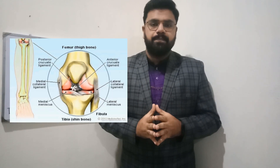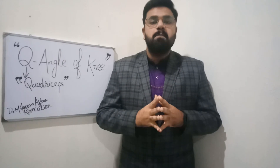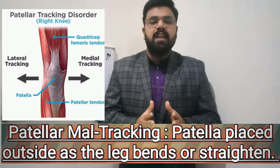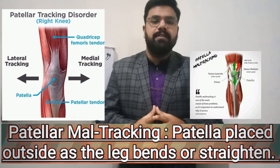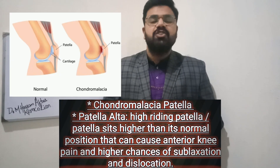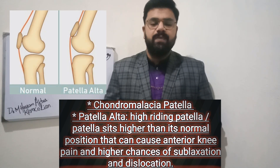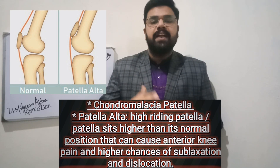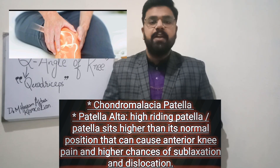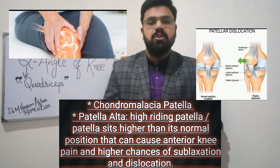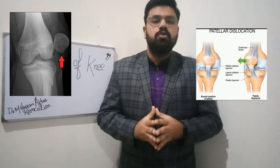Now we will briefly discuss the impact of an increased Q angle on knee joint function. First, the patella moves outside of its normal position, generally in the lateral direction. Second, the chances of chondromalacia patella also increase. Third is patella alta, also defined as high-riding patella, where the patella is placed higher than its normal position, which can cause anterior knee pain and increase the chances of patellar dislocation. Lateral tracking of the patella can also lead to subluxation or dislocation of the patella.